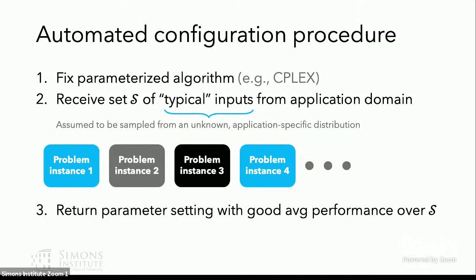We run some optimizations and we return a parameter setting which has good average empirical performance over my training set. And by performance, I mean, for example, good runtime, solution quality, memory usage, and so on.